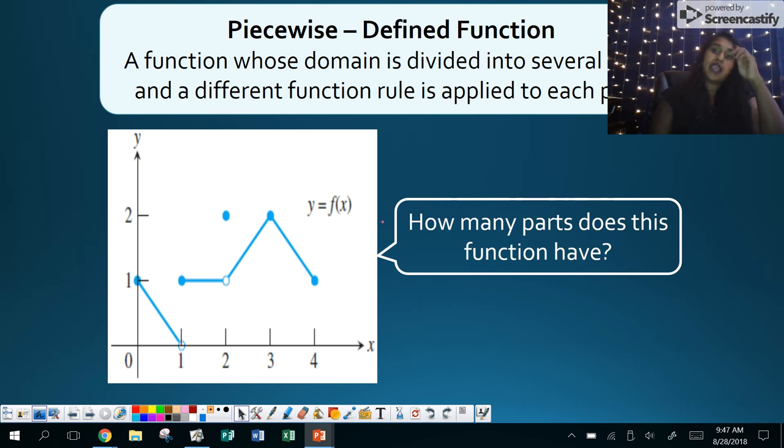The question is how many parts does this function actually have? And as you can see, you can see a part right here, a part right here, a part right here. That's four parts so far, but I cannot forget this little part right here because that is technically part of my piecewise function.